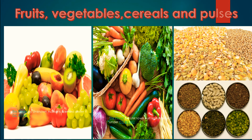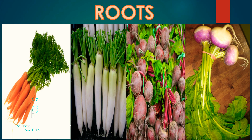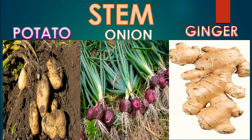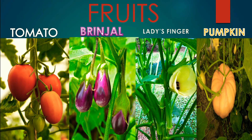We eat roots of some plants like carrot, radish, beetroot and turnip as vegetables. We eat stems of some plants like potato, onion and ginger as vegetables. We eat fruits of some plants like tomato, brinjal, lady's finger and pumpkin as vegetables.